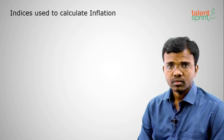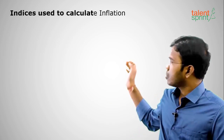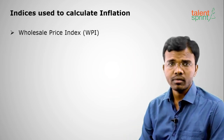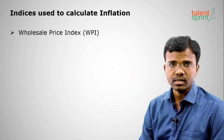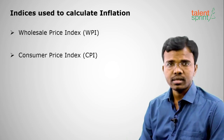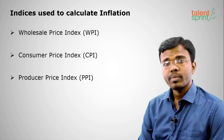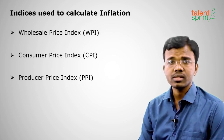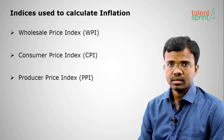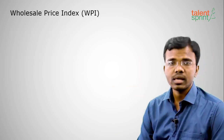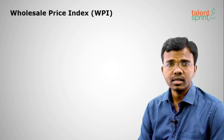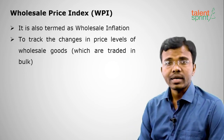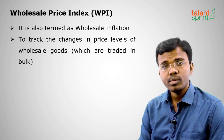There are two types of indices used in India, but three in the world. The first is Wholesale Price Index (WPI), the next is Consumer Price Index (CPI), and the third is Producer Price Index (PPI). India uses CPI and WPI only. The US uses PPI. The first — Wholesale Price Index — is also called wholesale inflation. It is used to track the changes in price levels of wholesale goods.